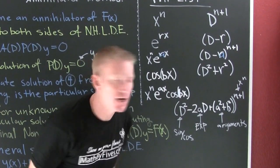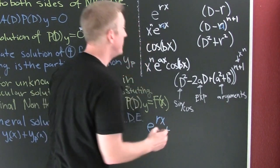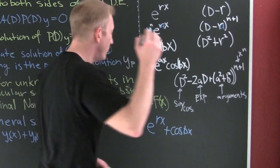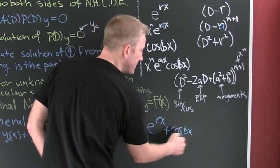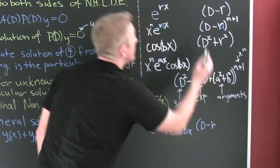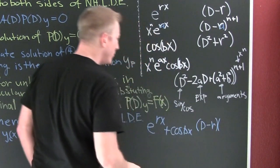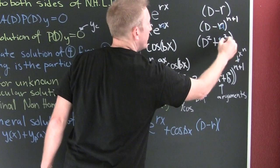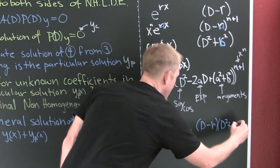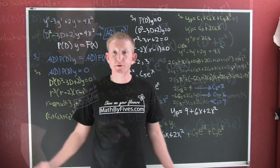If you have a sum — something like e^(rx) plus cosine(bx) — that's going to require a product of the annihilators. Whatever kills e^(rx) times whatever kills cosine(bx). The annihilator of e^(rx) is (D − r), and the annihilator of cosine(bx) is (D² + b²). So the annihilator of that sum is (D − r)(D² + b²).